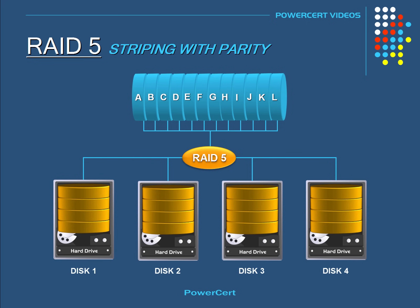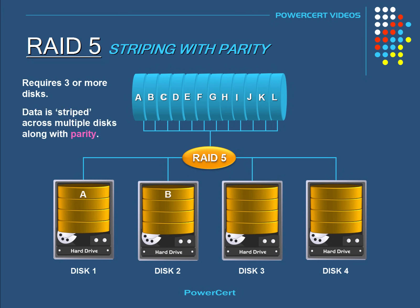Next we'll talk about RAID 5. In order to use RAID 5, you need to have three or more disks. RAID 5 is probably the most common setup that is used, because it's fast and it can store a large amount of data. In a RAID 5 setup, data is not duplicated, but it's striped or spread across multiple disks. And in addition to the data, there is another very important piece of information that is being evenly spread across all the disks, and this information is called parity.